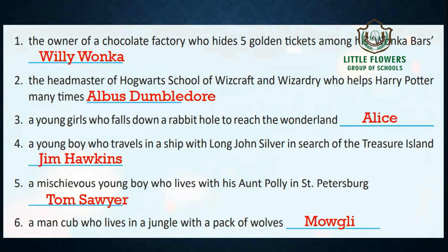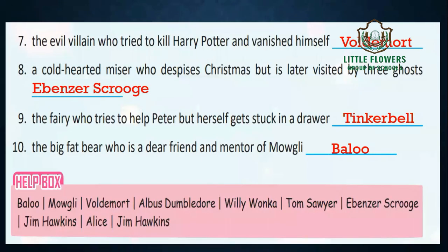Number five: a mischievous young boy who lives with his Aunt Polly in St. Petersburg — he was Tom Sawyer. Number six: a man-cub who lives in a jungle with a pack of wolves — the famous character Mowgli. Number seven: the evil villain who tried to kill Harry Potter — he was Voldemort.